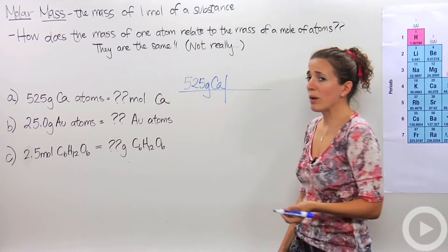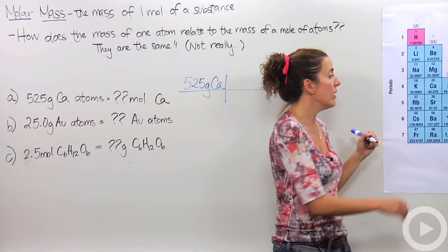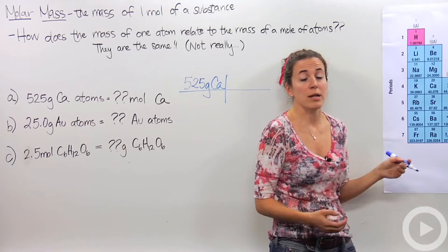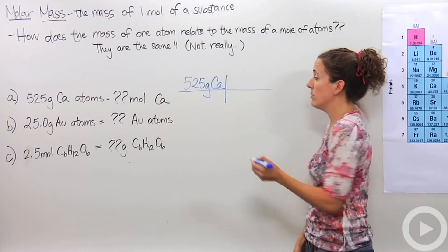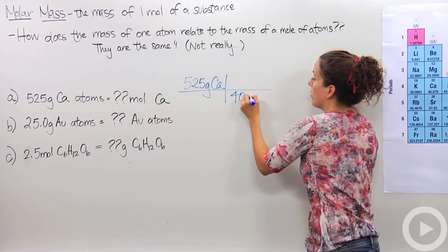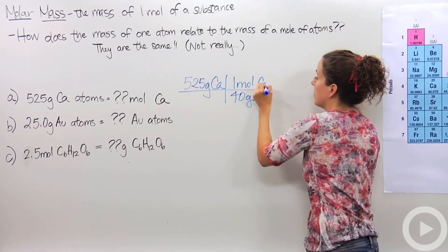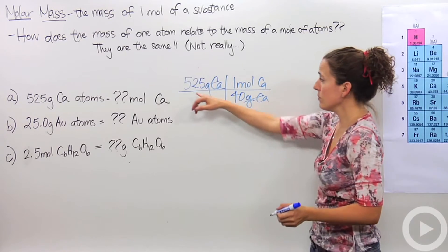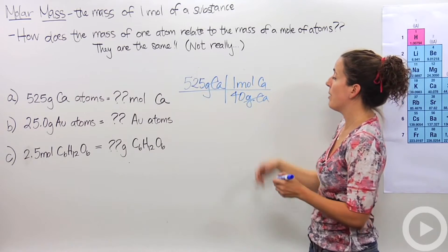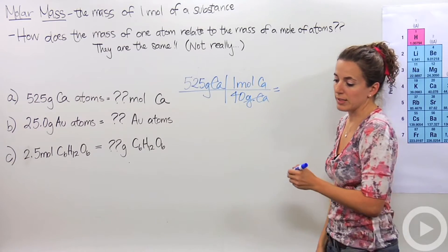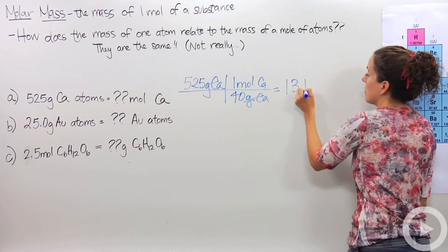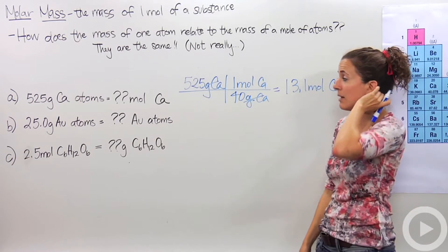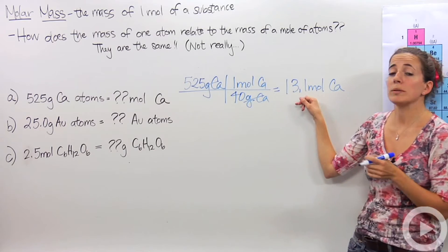Okay. Well, we need to find the mass of a mole of calcium. So let's go back to our periodic table. And we know that we have 40.078. We're just going to round to 40 grams for every mole. So we have 40 grams for every one mole of calcium. I put this in the bottom so I can cross this unit out. 525 divided by 40 is going to give us 13.1 moles of calcium.